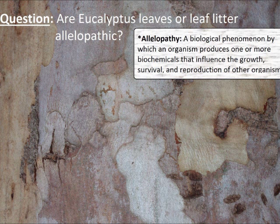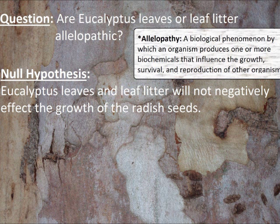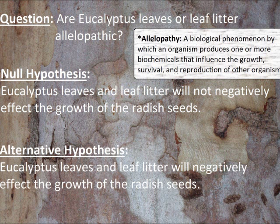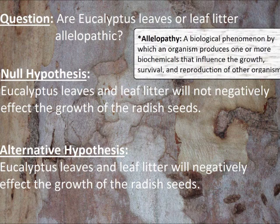Our null hypothesis for this experiment is that eucalyptus leaves and leaf litter will not negatively affect the growth of the radish seeds. Our alternative hypothesis — what we're really testing here — is that eucalyptus leaves and leaf litter will negatively affect the growth of our radish seeds.